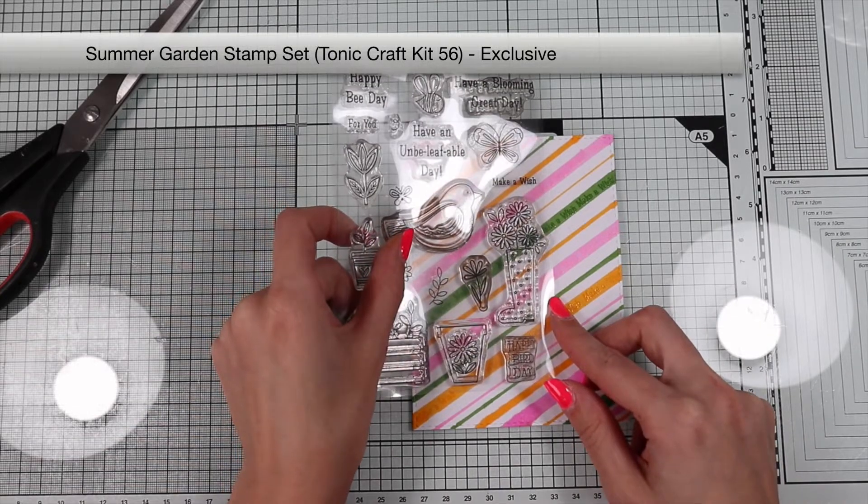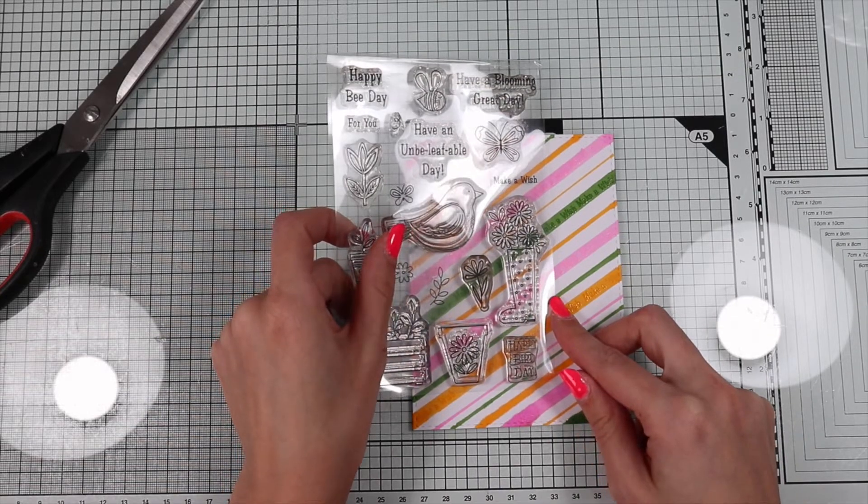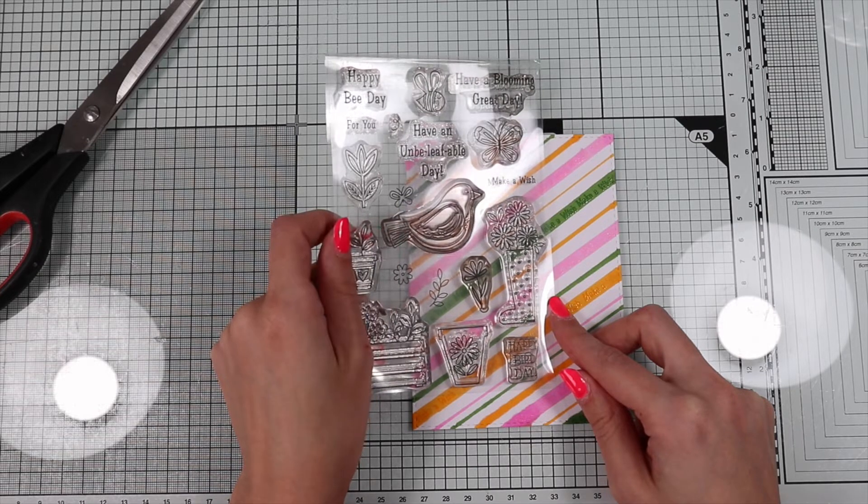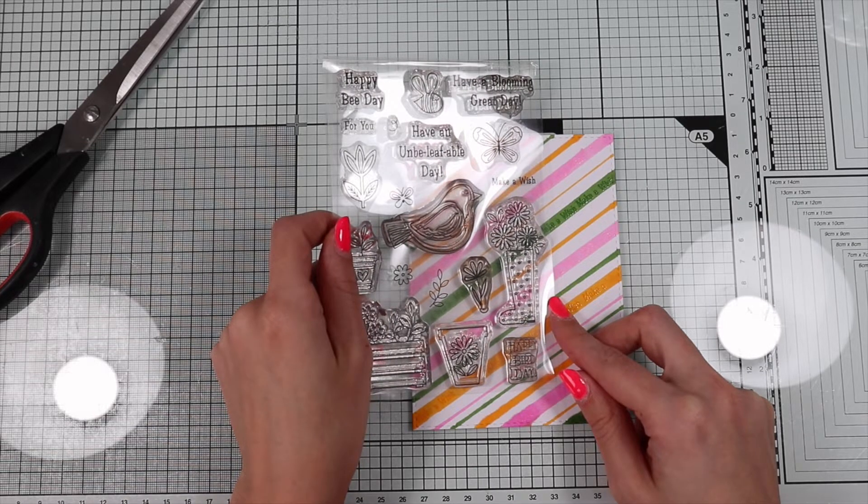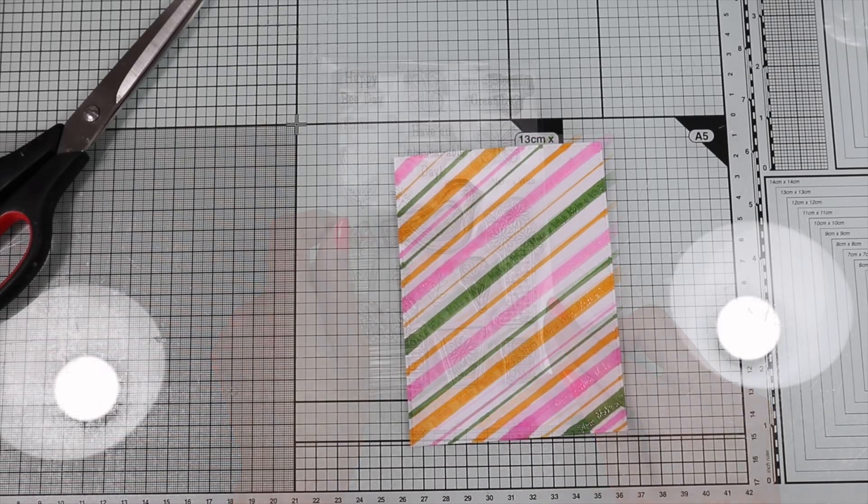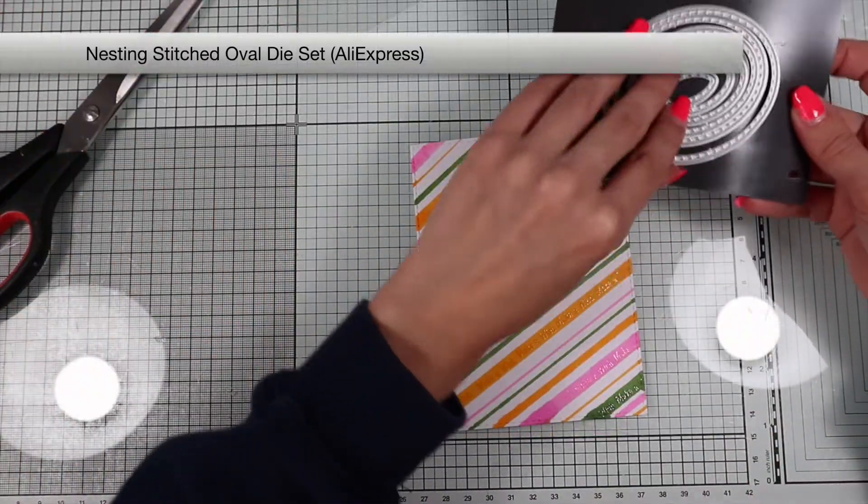Now how to use such a colorful and busy background? One solution is to add a very neutral focal point, as we did for the previous card. Use a stamp but leave it in black and white.